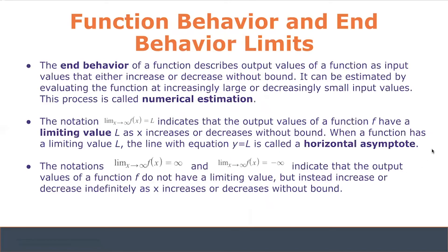Finally, we have end behavior limits. The end behavior of a function describes output values as input values increase or decrease without bound, and it can be estimated by evaluating the function at increasingly large or small input values — a process called numerical estimation. The notation, the limit as x approaches infinity of f of x equals L, indicates output values have a limiting value L. When a function has a limiting value L, the line y equals L is called a horizontal asymptote.